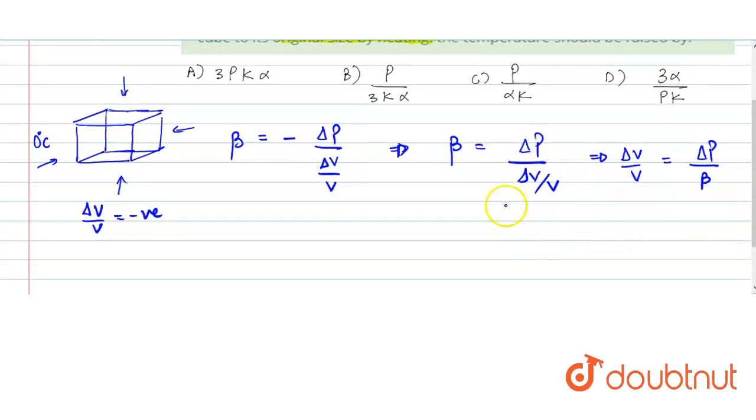Now, in this problem, pressure applied is given to us as P and the value of bulk modulus is given to us as K. So that becomes delta V by V or volumetric strain.